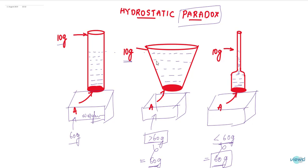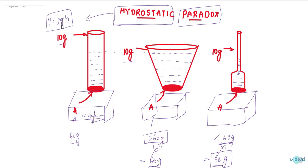Why is this happening? What is the hydrostatic paradox? Hydrostatic law states that pressure equals ρgh. It says that pressure depends only on depth — as we go deeper, pressure depends only on that depth. That is called the hydrostatic law.